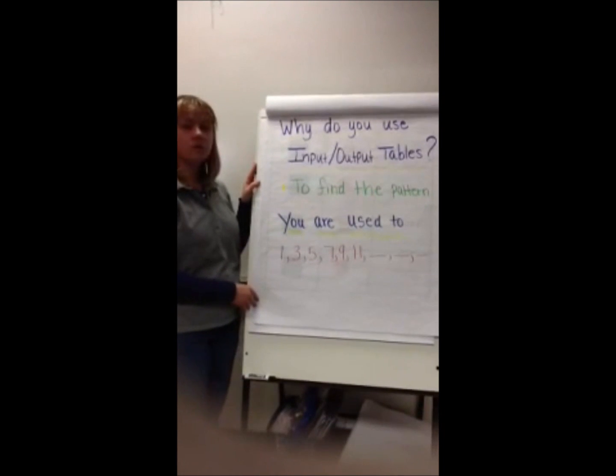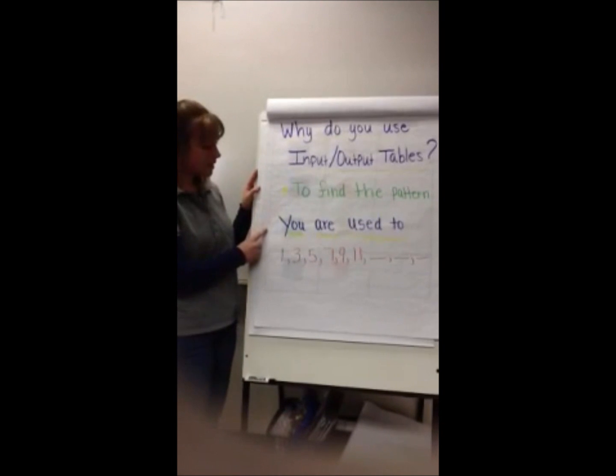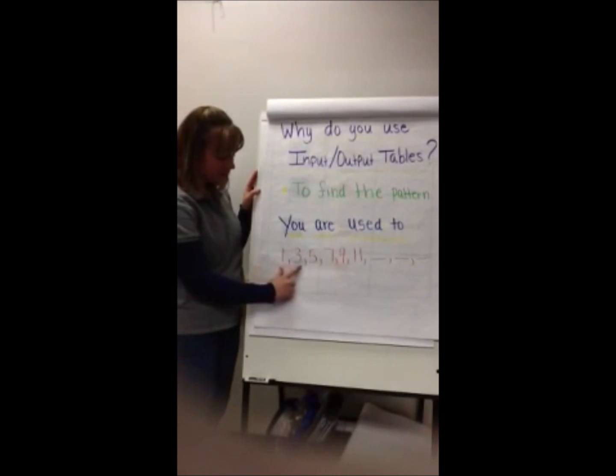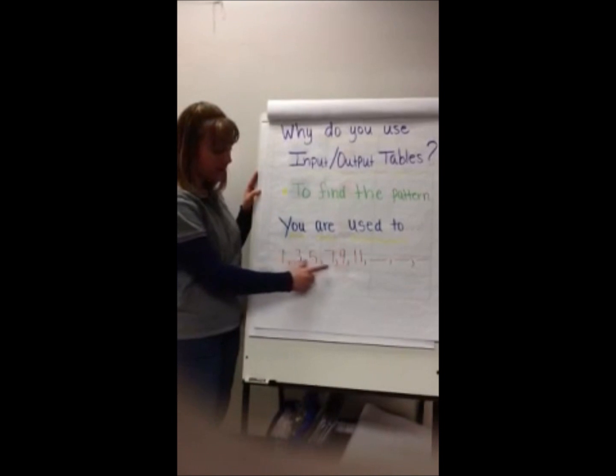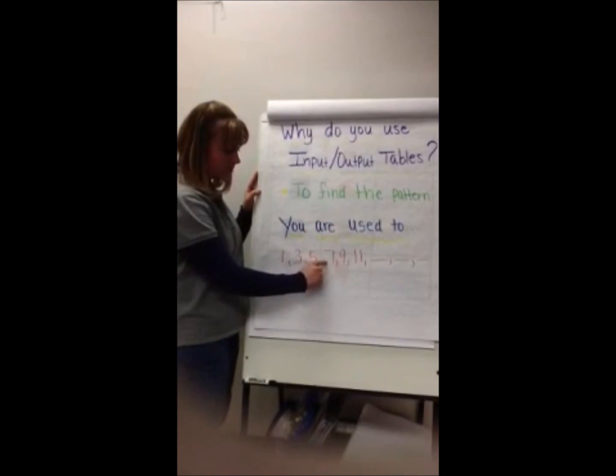Okay, so why do we use input-output tables? To find the pattern. And you are used to seeing patterns like this, where you have 1, 3, 5, 7, 9, and 11. You have to find the rule, which is plus 2, to fill in the blanks.